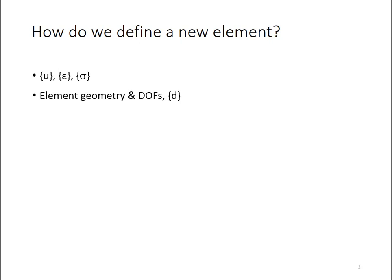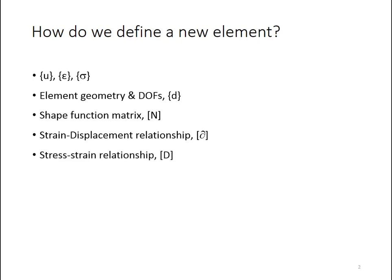That will give us a degree of freedom vector. Then we need to establish a shape function matrix that defines how the displacement field varies within the element and how that variation relates back to the degrees of freedom. We also look at the relationship between the strain vector and the displacement field vector u. That gives us this partial derivative matrix operator. Next we need to look at the relationship between stress and strain. That's going to give us our D matrix, which has our material properties in it.